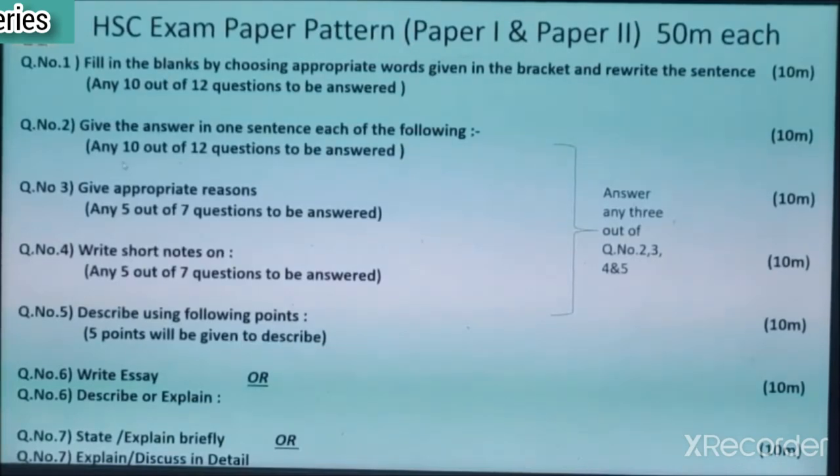Question number 5: describe the following points. This means 5 points will be given to describe, and it consists of 2 marks each point. There will be 5 points and it's compulsory. All 5 points are compulsory to describe. It consists of 10 marks.